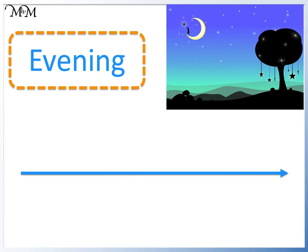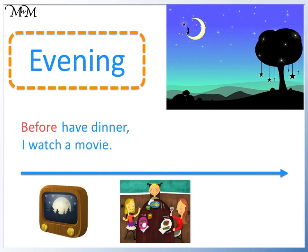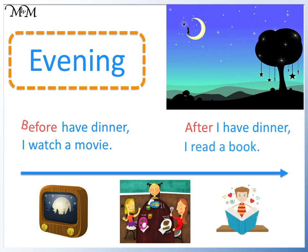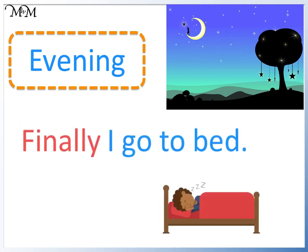This is the order of the activities in the evening. Before I have dinner, I watch a movie. After I have dinner, I read a book. Before dinner means that dinner happens after the movie. After dinner means that dinner happens before reading a book. Finally, I go to bed. Finally means that this is the last activity we do after all of the others.